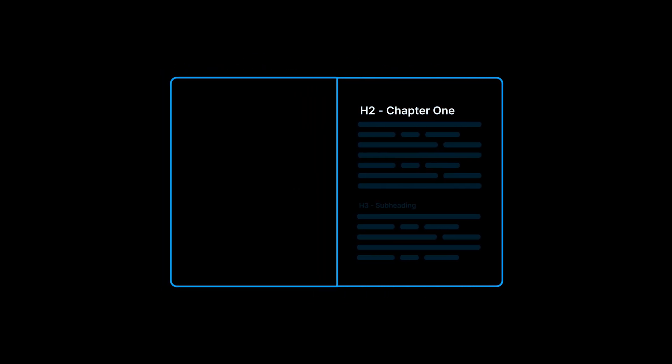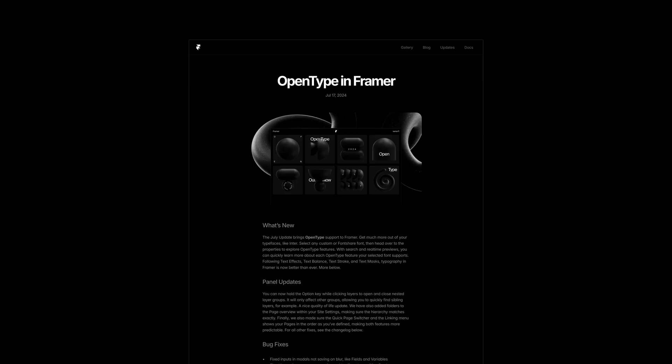Think of it like the anatomy of a book. H1 is the title, H2s are the chapters, H3s are the subheadings inside each chapter, and so on. Here's the big rule: each page should have one H1 — just one — clearly stating what the page is about. This not only helps screen reader users scan the page easily, it also helps search engines understand what's important and how your content is organized.